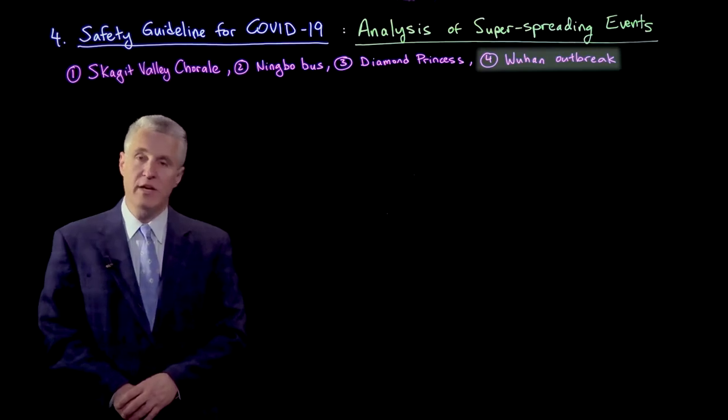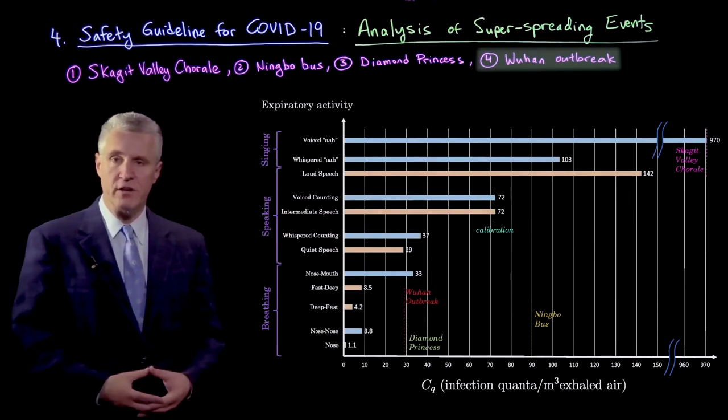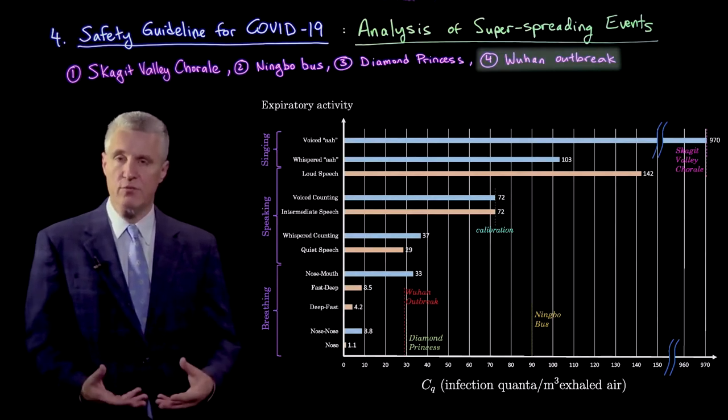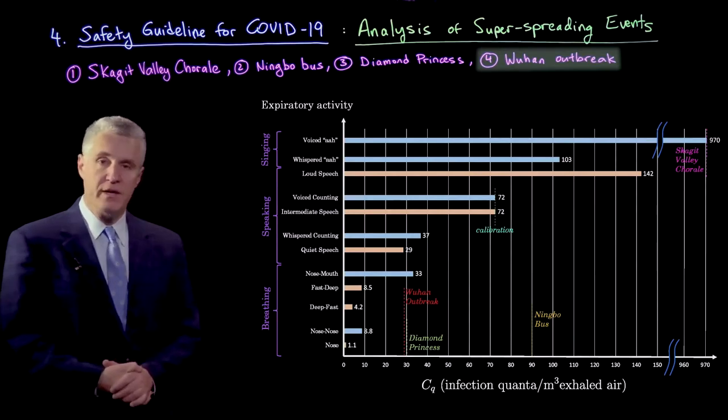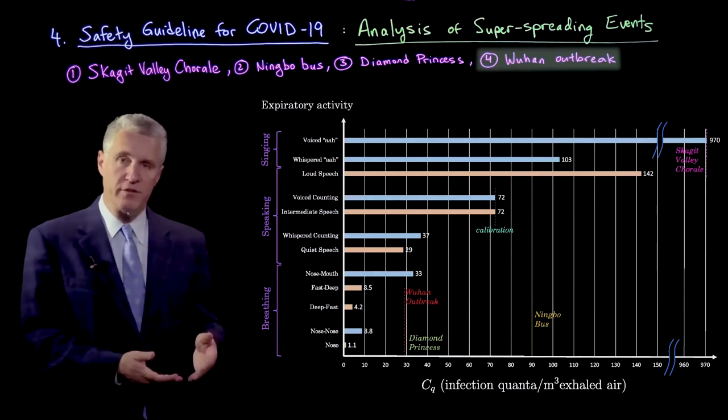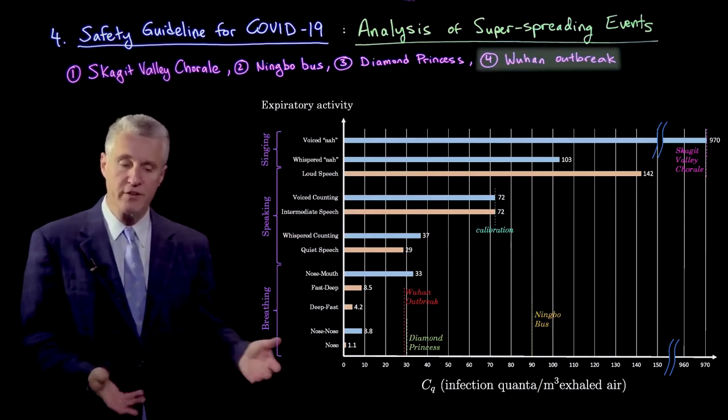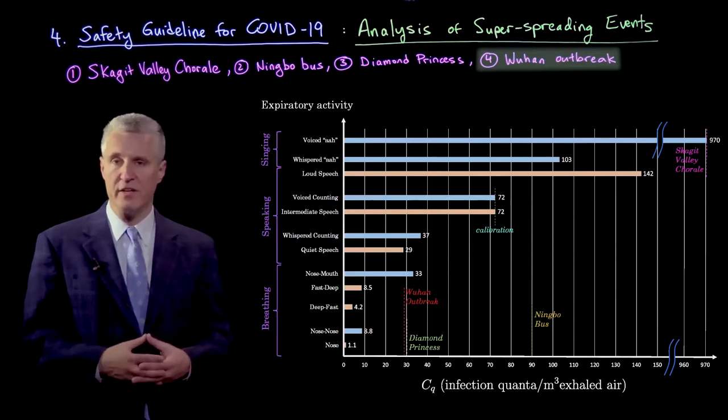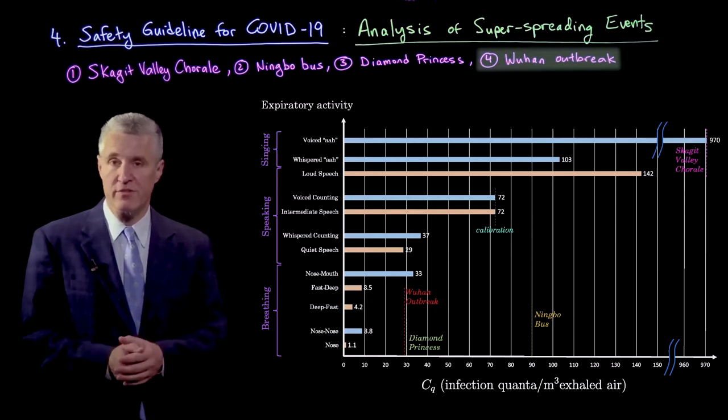If we take all of this analysis and come back to our figure of CQ values—that's the number of infection quanta per meter cube of exhaled breath for an infected individual—then we can put our inferences for the Ningbo bus, the Diamond Princess, and the Wuhan outbreak on the same plot as the values we inferred by rescaling the value of 900 for the Skagit Valley Corral.